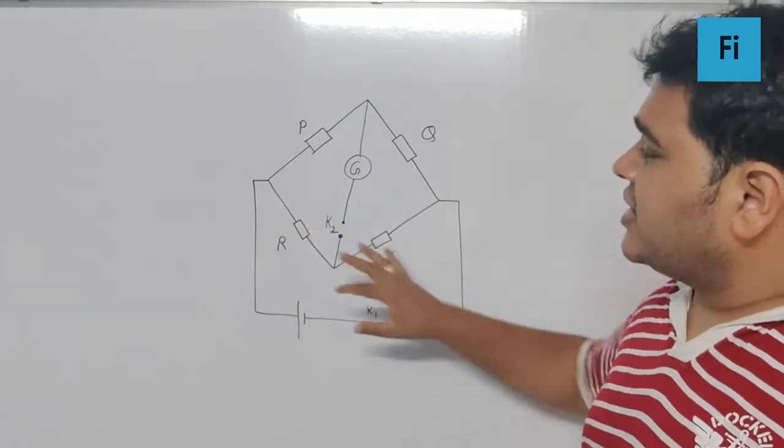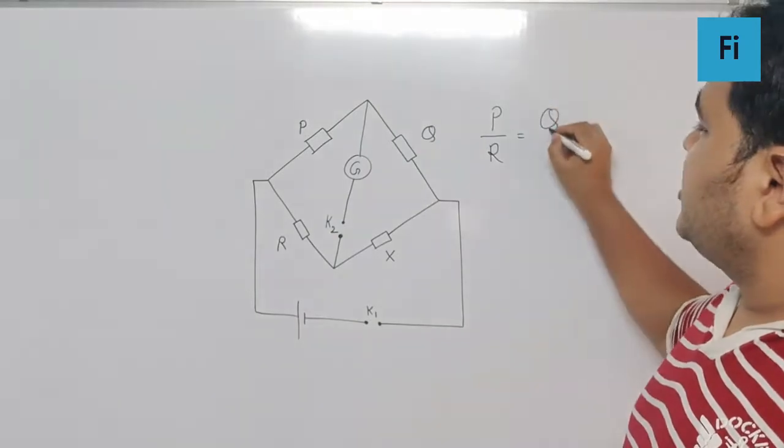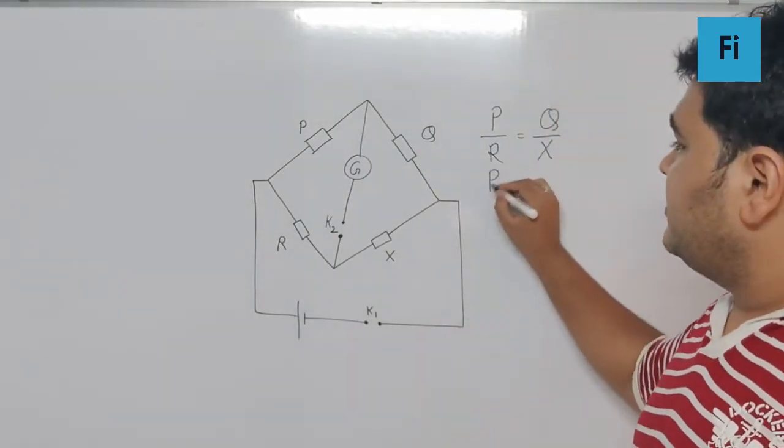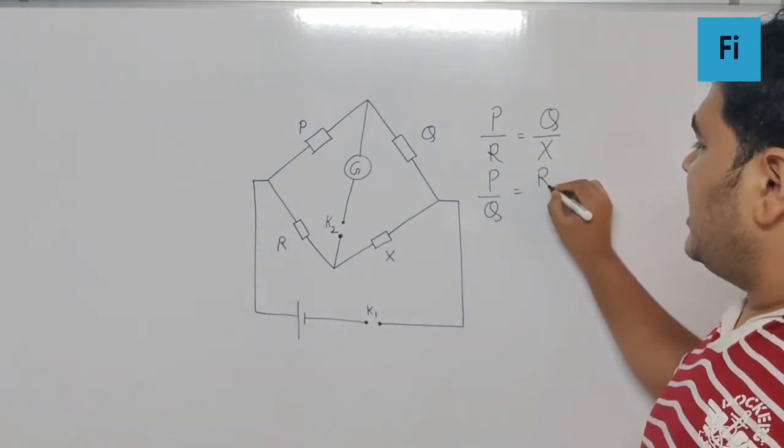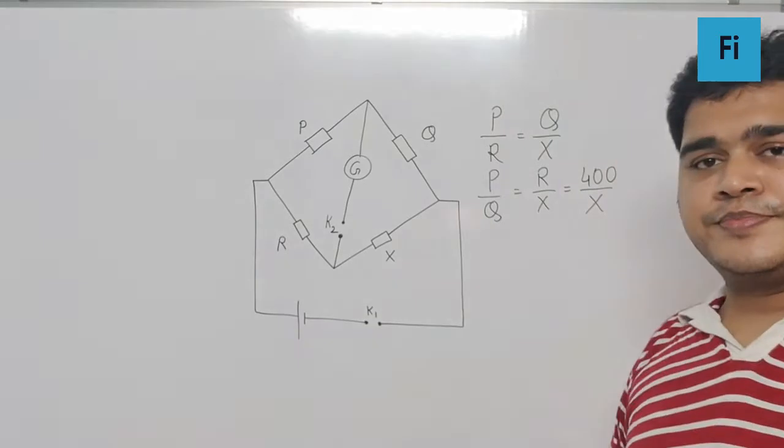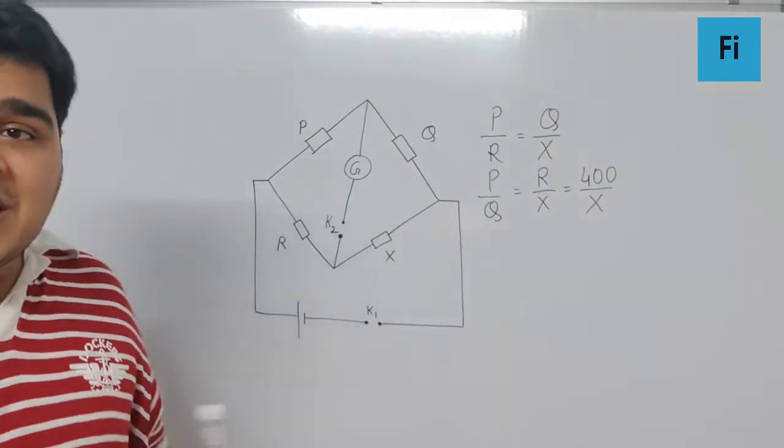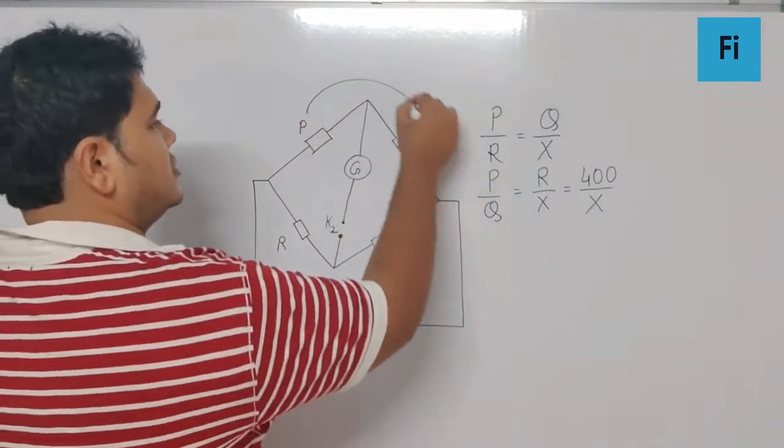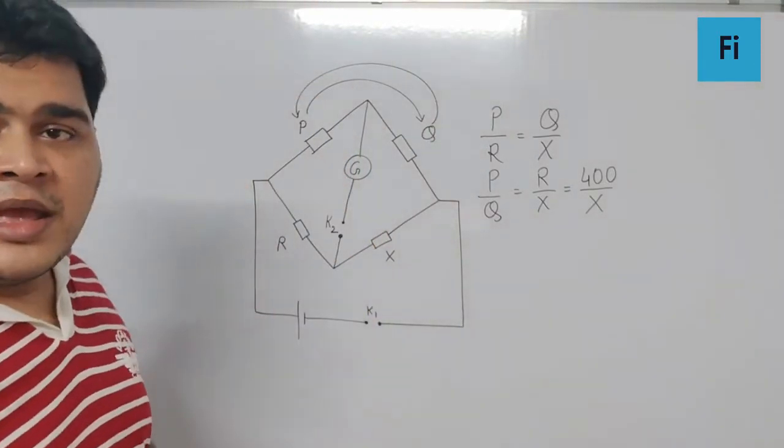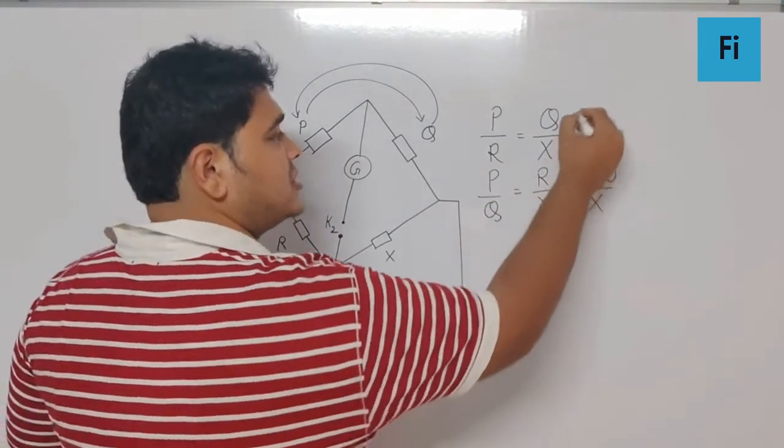If this circuit is balanced, I can say P by R is going to be Q by X. So definitely we can say P by Q is R upon X, where R is 400. Now they say P and Q are interchanged. In that case, if you want a balanced condition, this is for the first case.